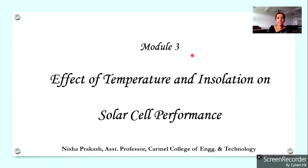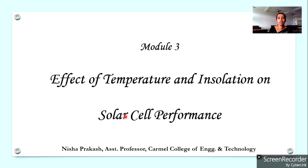We have studied the characteristics of a solar cell in the previous lecture. Now we have to see when temperature and insolation changes, how these characteristics are affected — what are the effects of temperature and insolation on the performance of a solar cell?